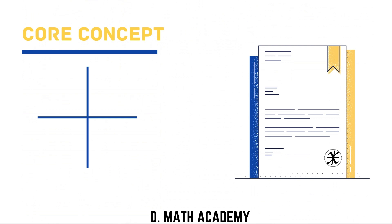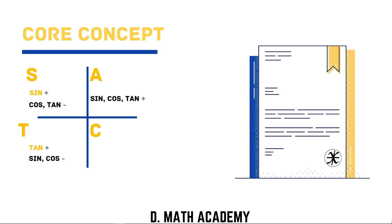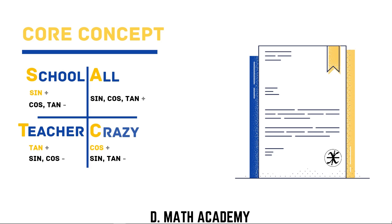I'm going to explain the core concept of this topic, covered using the four initials ASTC. 'A' stands for 'All positive' — sine, cosine, and tangent are all positive. 'S' means only sine is positive, while cosine and tangent are negative. 'T' means tangent is positive and sine and cosine are negative. 'C' means cosine is positive and sine and tangent are negative. A mnemonic to remember this is: 'All School Teachers are Crazy.' After memorizing this, you should know which values are positive and which are negative in each quadrant.